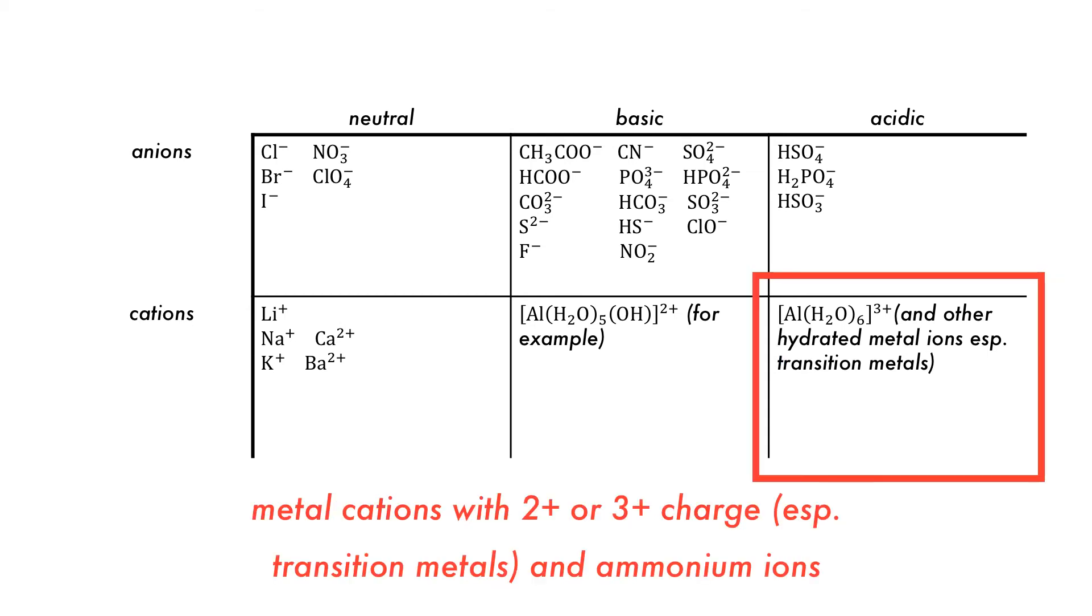Acidic cations are usually transition metals with water molecules coordinated to them, or cations formed from ammonium and its organic derivatives.